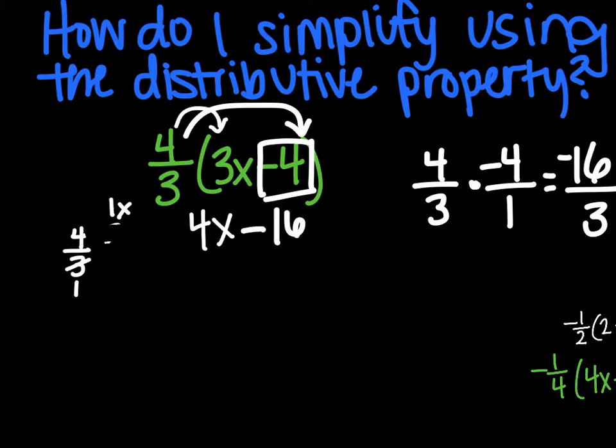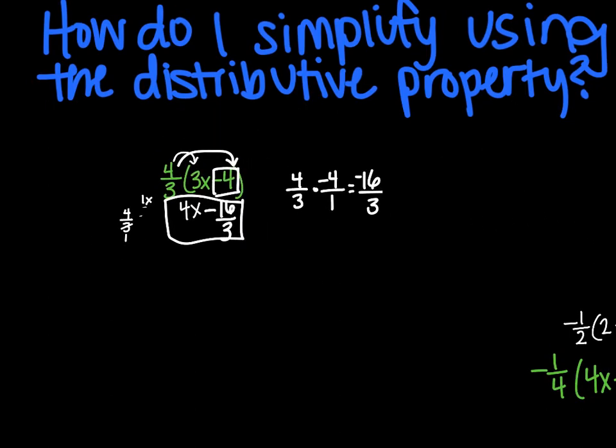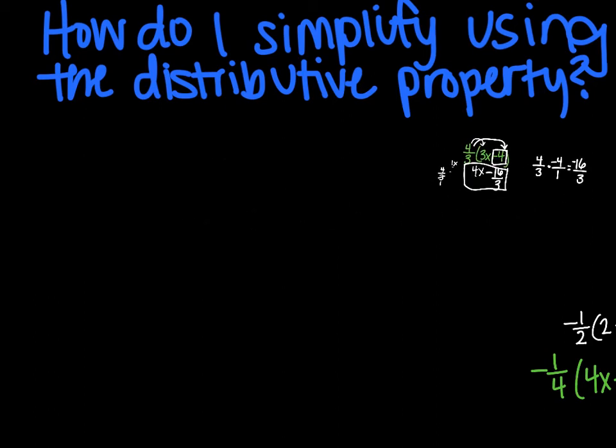You can't simplify that any further, so that is your answer: minus 16/3. And there, ladies and gentlemen, is the final answer for that problem: 4x − 16/3.